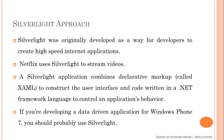The Silverlight approach was developed as a way for developers to create high-speed internet applications. If we design a mobile application using the Silverlight approach, it produces applications with high internet speed. These days, Netflix is using Silverlight to stream their videos due to its high speed. A Silverlight application combines two components: the first is XAML — extensible application markup language — used to design the user interface, and the code is written in a .NET Framework language because it controls the application behavior.